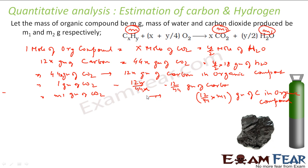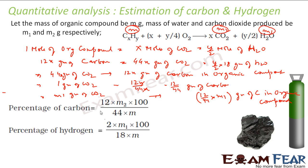Since I have got M2 gram of carbon dioxide, that means 12/44 × M2 gram of carbon was there in the organic compound. So to find percentage, this much is the output and M was the input: (12/44 × M2) / M × 100. So percentage of carbon in the organic compound is nothing but mass of carbon divided by total mass into 100, which is 12M2 / (44 × M) × 100.